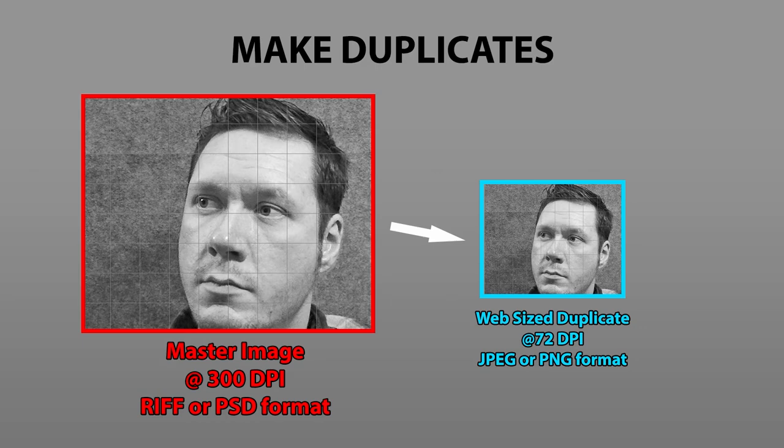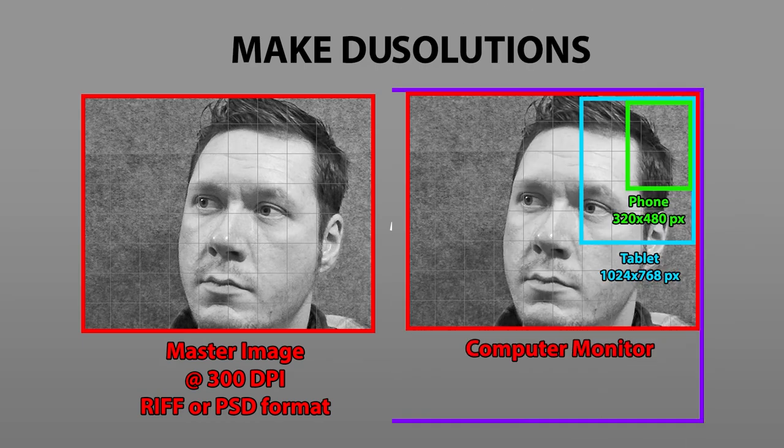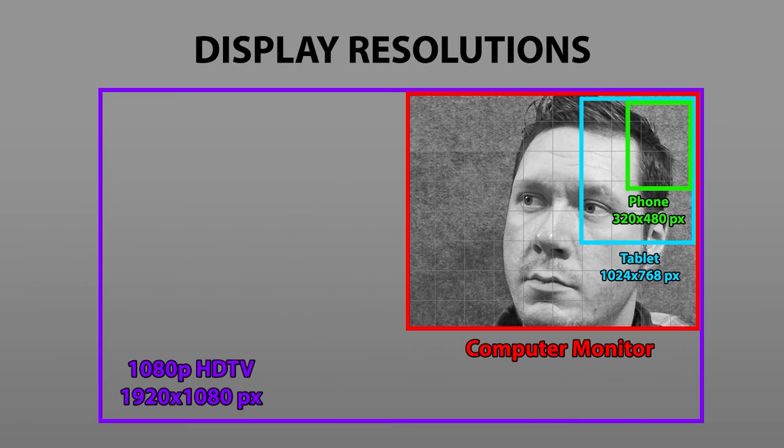It's best to choose image dimensions that will fit on most device screens. A lot of people use tablets and smartphones to look at art, and these devices have smaller screens, so keep that in mind when deciding on how large to publish your work. Phone screens are around 320x480 pixels and HDTVs are 1920x1080 pixels, so try to stay within that range when displaying on the web.